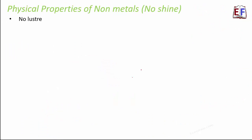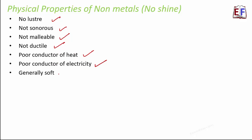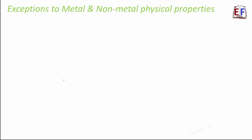Let's look at the physical properties of nonmetals. First: no luster — they have no shine, unlike metals. Not sonorous — you do not get a ringing sound like you do with metals. Not malleable — you cannot beat them into thin sheets. Not ductile — you cannot draw them into thin wires. Poor conductor of heat. Poor conductor of electricity. They are generally soft. They have low density. Examples include carbon, oxygen, and nitrogen.